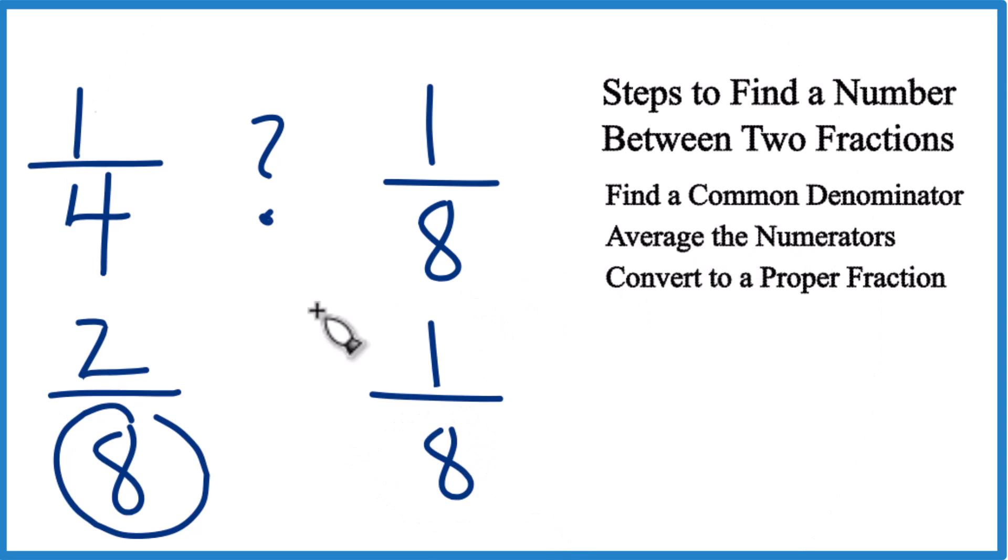Next, we're going to average the numerators. Because if you think about it, there's some number over 8 that's between 2 and 1. So if we average 2 and 1, we'll find that number.